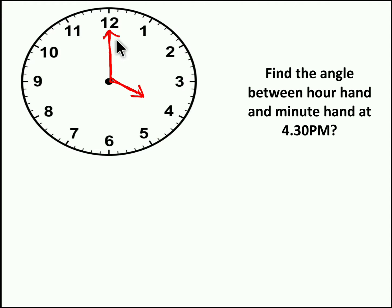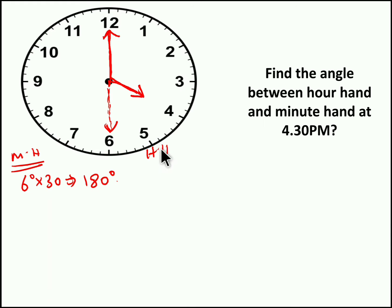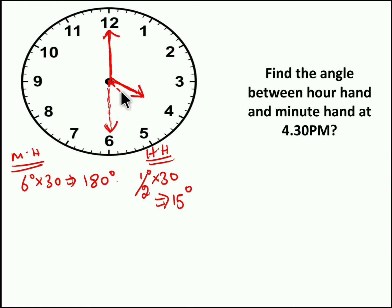Now we need to find the angle at 4:30 PM. The minute needle has to move 30 minutes from 4 PM. In 1 minute the minute hand moves 6 degrees, so in 30 minutes it will move 180 degrees. During the same time the hour hand will also move. The hour hand moves half a degree per minute, so in 30 minutes it will move 15 degrees — the hour hand gets tilted 15 degrees in 30 minutes.